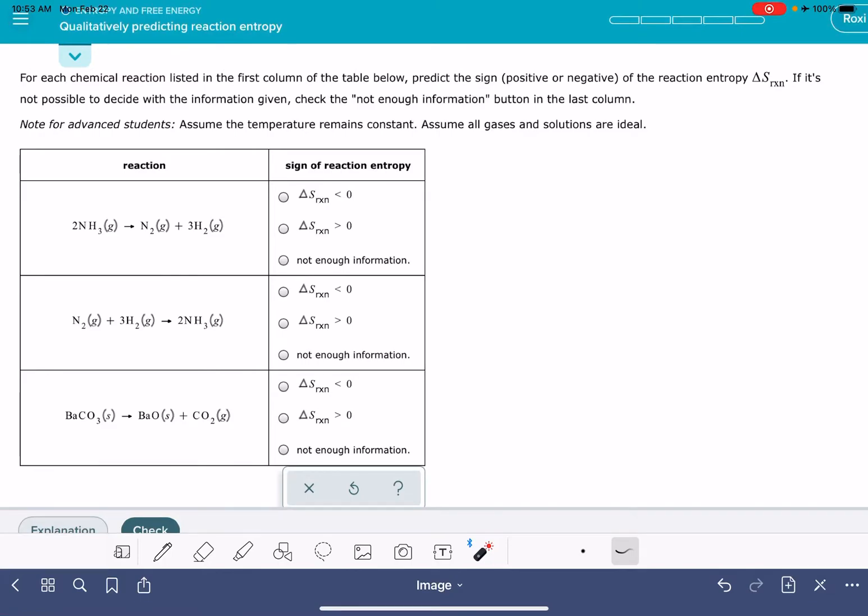In this video, I'm going to show you how to solve the Alex problem called qualitatively predicting reaction entropy. In these problems, we're given a chemical reaction and asked to predict whether the change in entropy is a positive number or a negative number.